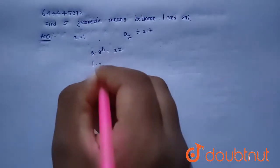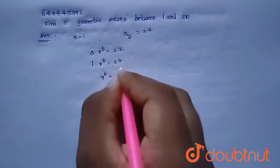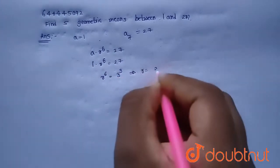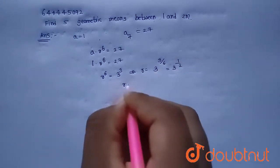27 can be written as 3³. So from this, r = 3^(3/6) = 3^(1/2) = √3.